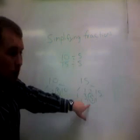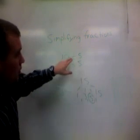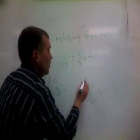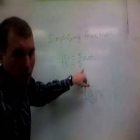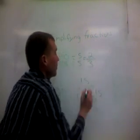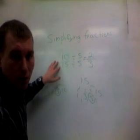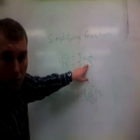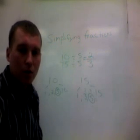5 is my greatest common factor. 10 divided by 5 is 2, and 15 divided by 5 is 3. So 10 fifteenths in simplest form is 2 thirds, and that is simplifying fractions.